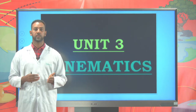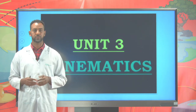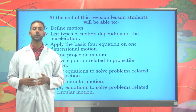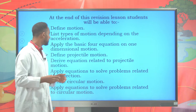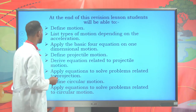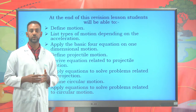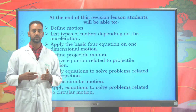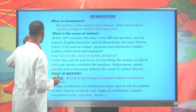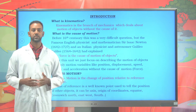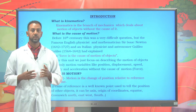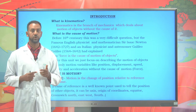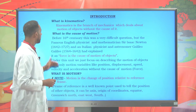In this unit on kinematics, we will define what motion is and see different types of motion depending on acceleration: uniform, uniformly accelerated, and accelerating motion. We will use the four most important kinematic equations, define projectile motion and circular motion, and examine them under two-dimensional motion. Kinematics is a branch of physics that studies motion and motion variables, but not the cause — the cause of motion is force, which we do not investigate here.